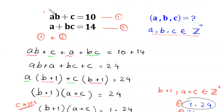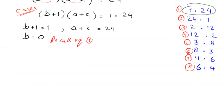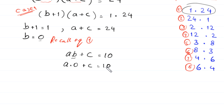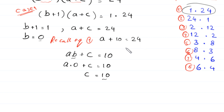Equation 1 is a(b + c) = 10. Replacing b with 0, this becomes a(0 + c) = 10, so a times 0 is 0 and c = 10. Now we put c = 10 into a + c = 24, so a + 10 = 24, giving a = 14.